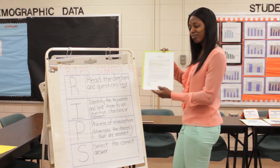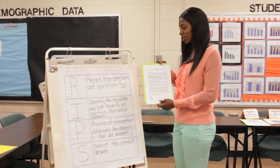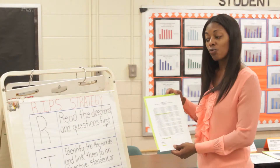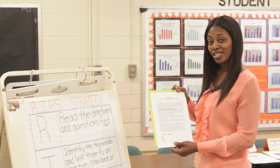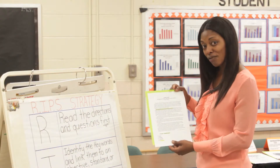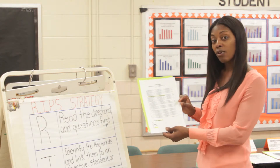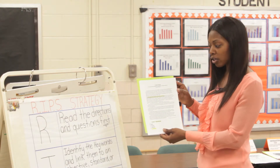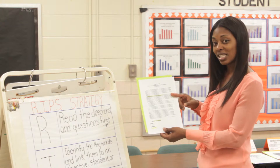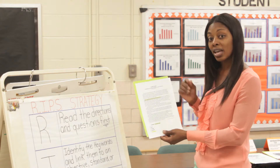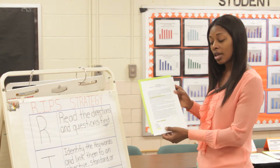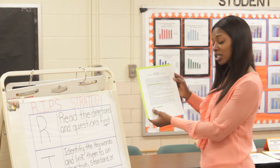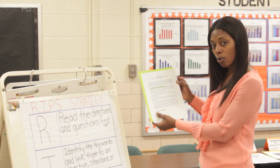The first thing you want to do is have your reading material, and we're going to go to R. R tells us to read the directions and questions first. Because there are no directions, I can use my prior knowledge and know that I'm going to use this passage in order to answer the question. So now I'm going to the question: in which city was Colin Powell born?